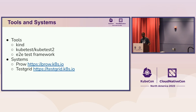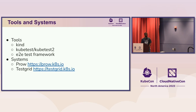Moving on to tools and systems. We've got a couple of tools that we've built. The first one is Kind — Kubernetes in Docker. It's a very powerful tool, I'll talk about that in a second. Another thing we've got is kubetest2, a test framework that we built to launch test clusters for Kubernetes.